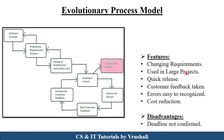The evolutionary model is used in large projects. There is a quick release, meaning module by module development, and customer feedback is taken after each and every module — which is not present in the incremental model. Errors are very easy to recognize and cost reduction is there. The disadvantage is that the deadline is not confirmed due to module by module development and customer feedback taken after every module.